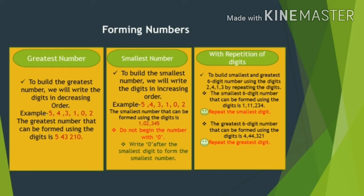Now we will learn how to form the greatest or smallest numbers. Here I will explain two different situations. In the first situation, you have to form the greatest and smallest number using six digits — meaning we need to form the largest and smallest number from six digits.